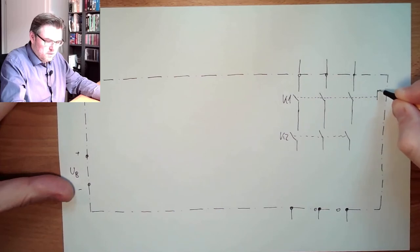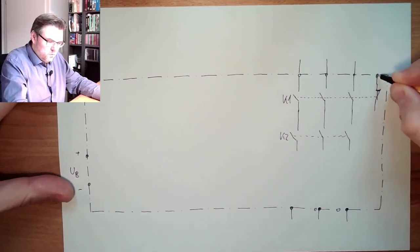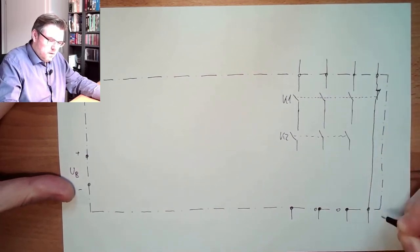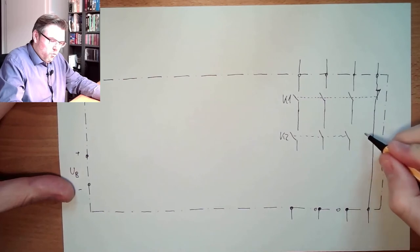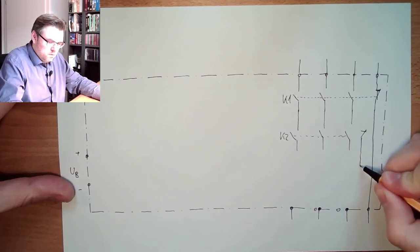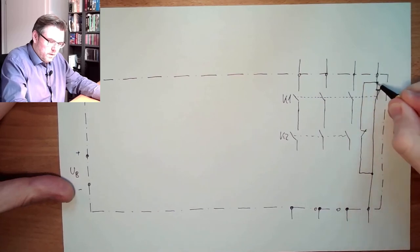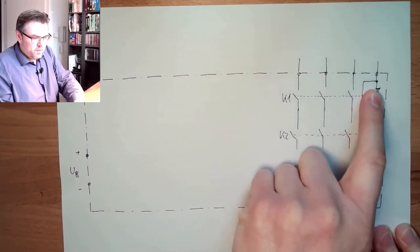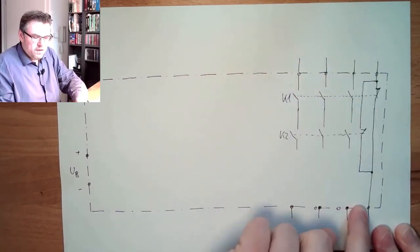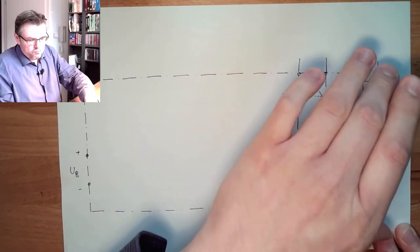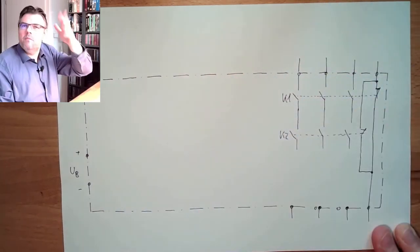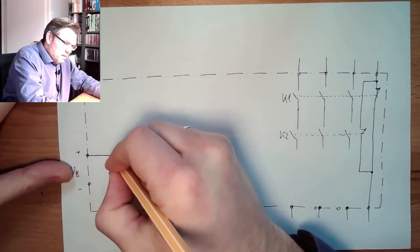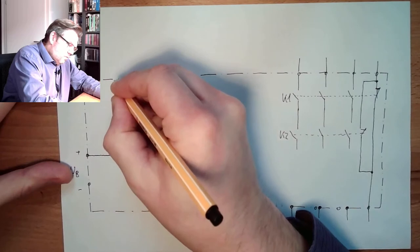Usually we also have here some additional contacts which just show if both are switched on. Looking like this, so if both are switched on, then both are open and here and here is no lower connected, so I could use here to let a lamp or something like this shine. Here the plus line, this is going already out.